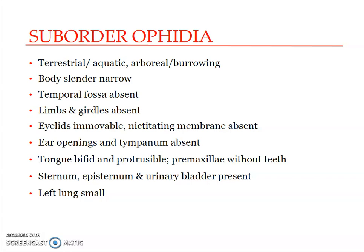Eyelids are immobile and nictitating membrane is absent; ear openings and tympanum are also absent. Tongue is bifid and protrusible. Sternum, episternum, and urinary bladder are absent, unlike in Lacertilia. The maxillae, palatines, and pterygoids — the bones of the skull — are freely movable.